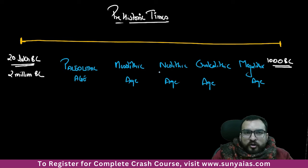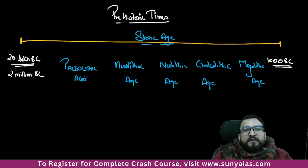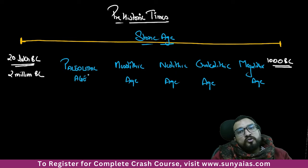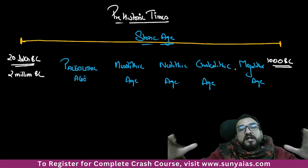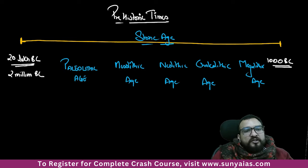These all come under the Stone Age. The word 'lithic' means stone — Paleo means old, Meso means middle, Neo means new, Chalco means copper, Mega means large. So: old stone, middle stone, new stone, copper-stone, large stone. This is what you have to understand under prehistoric times.